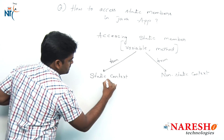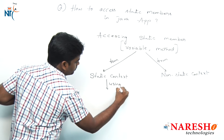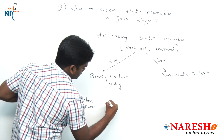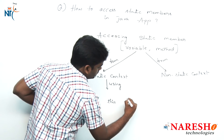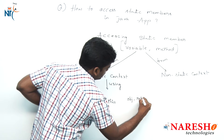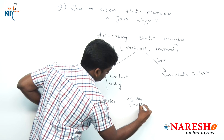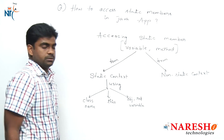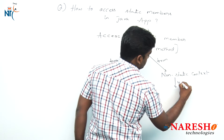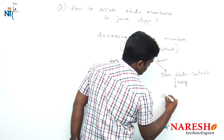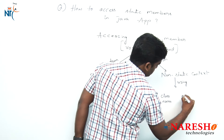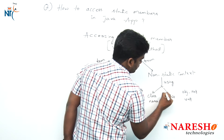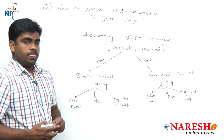The three options are: first, using the class name; second, using the `this` keyword; and third, using an object reference variable. So, class name, `this` keyword, and object reference variable are the three ways to access members.